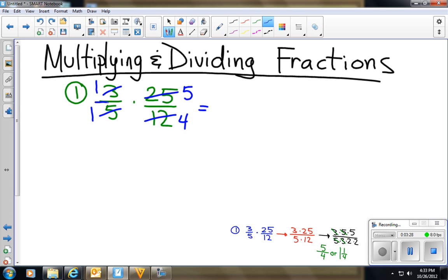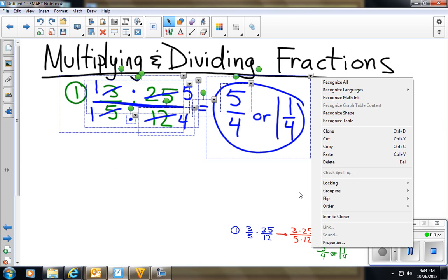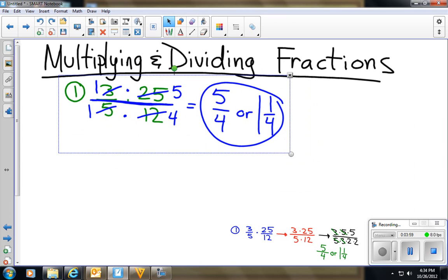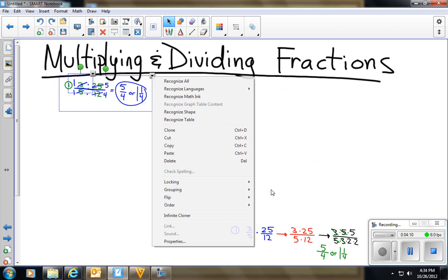So I'm going to go ahead and multiply. And if I want to think of it as one big problem up top and one problem at the bottom, and this is times, this is times. 1 times 5 is 5. 1 times 4 is 4. So I have 5/4 or 1 and 1/4. Either way is acceptable. I'm sure a lot of your math teachers would prefer you to have the answer as a mixed number because it's easier to check that way for the entire group. But technically speaking, either one of those answers is just fine and dandy.